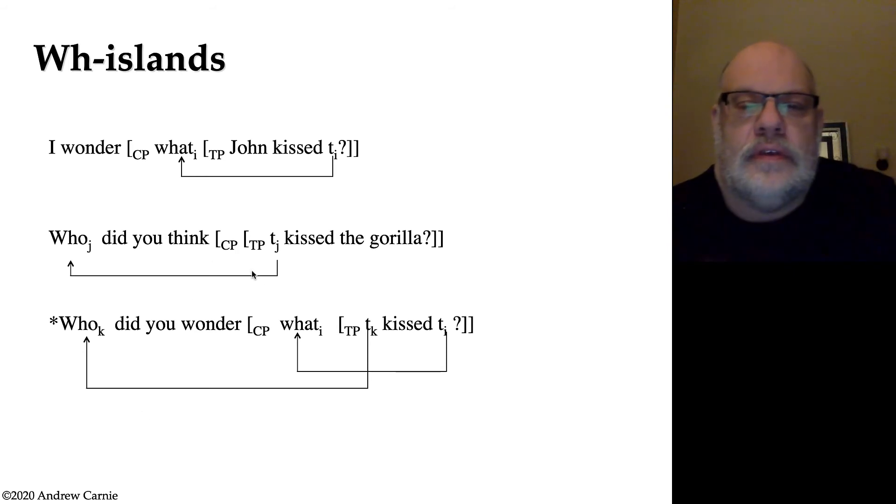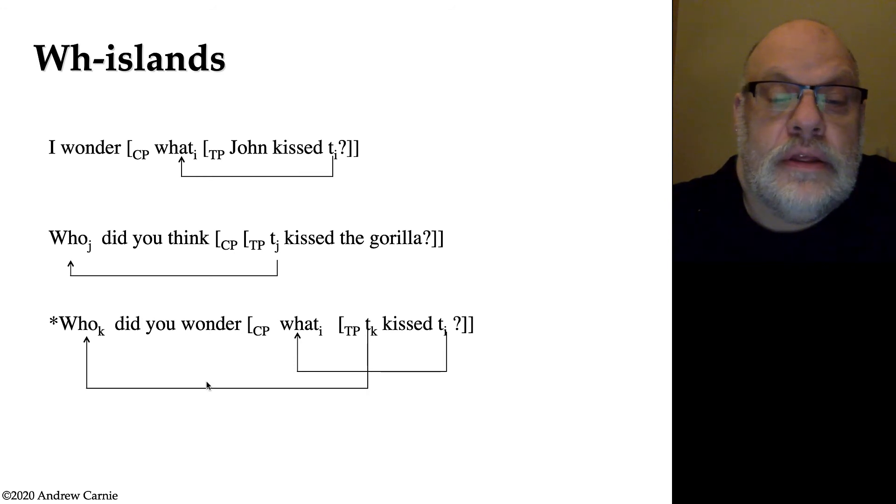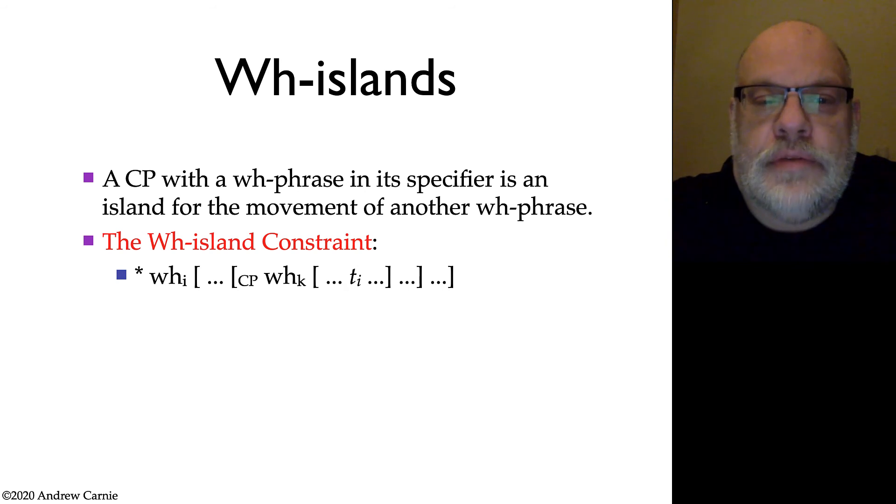What this example in the previous slide's example showed you was that you cannot do WH movement out of a CP that has another WH element in its specifier. So what's critically at stake here is our WH word that's in the specifier of this embedded clause seems to be blocking the movement of this other WH element up into the higher clause. This is a WH island. It's a WH island because the island is created by this embedded WH element.